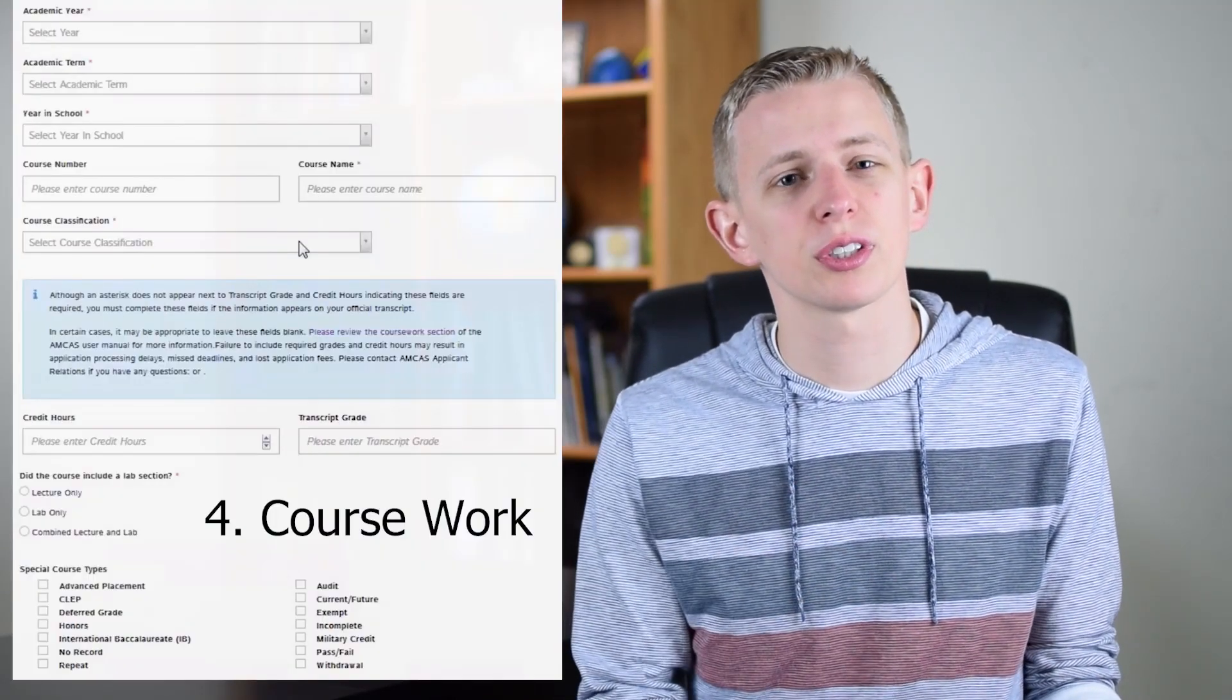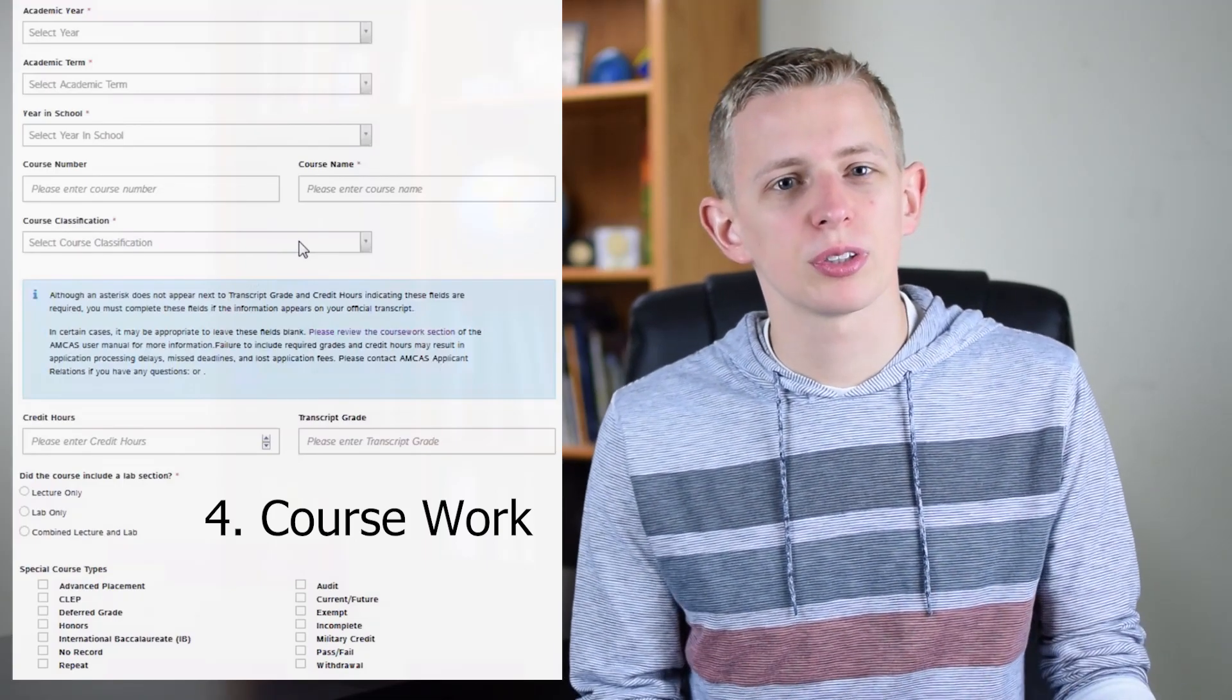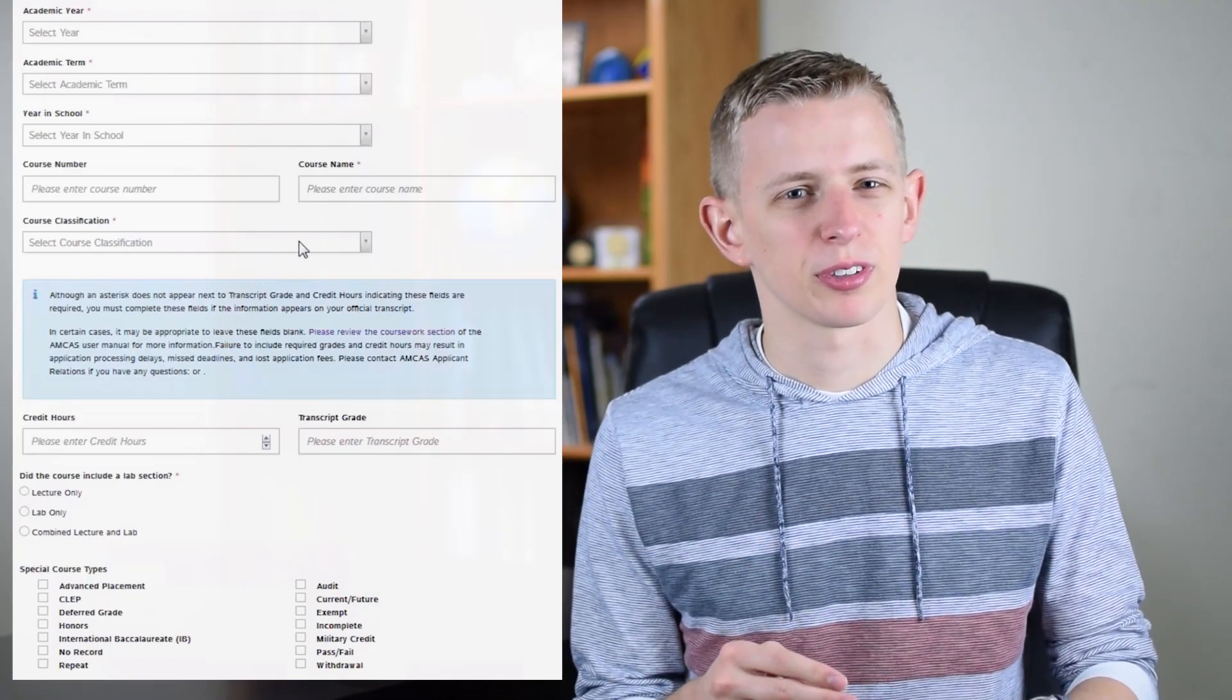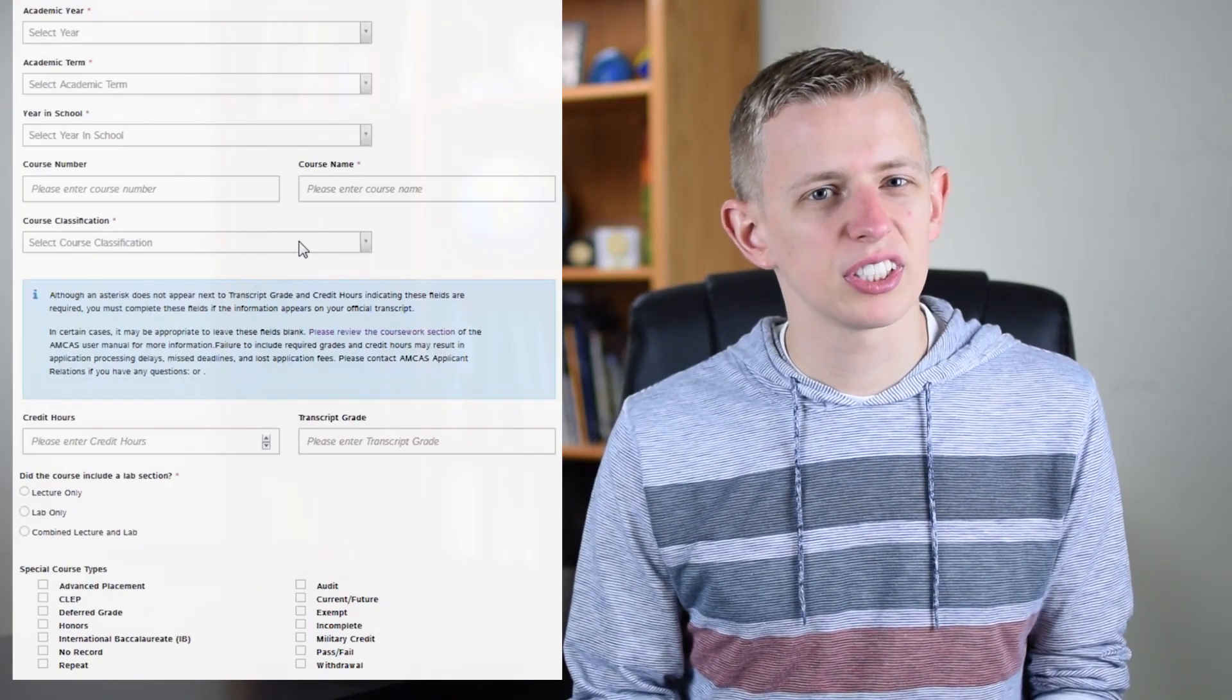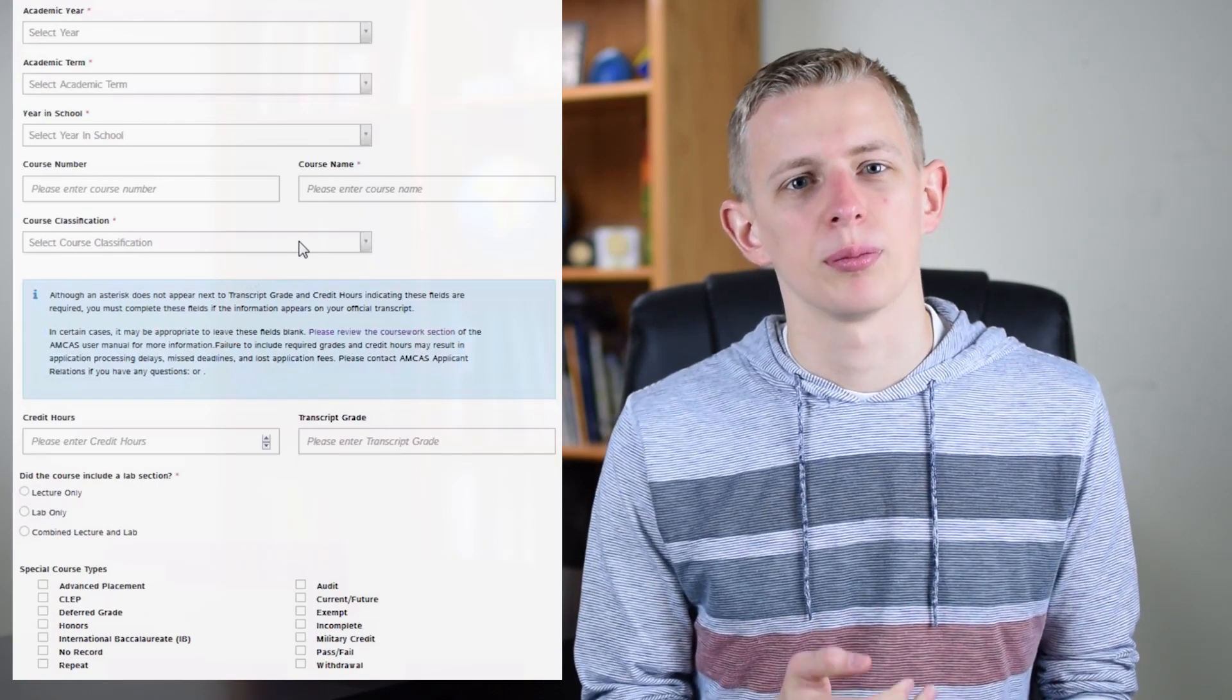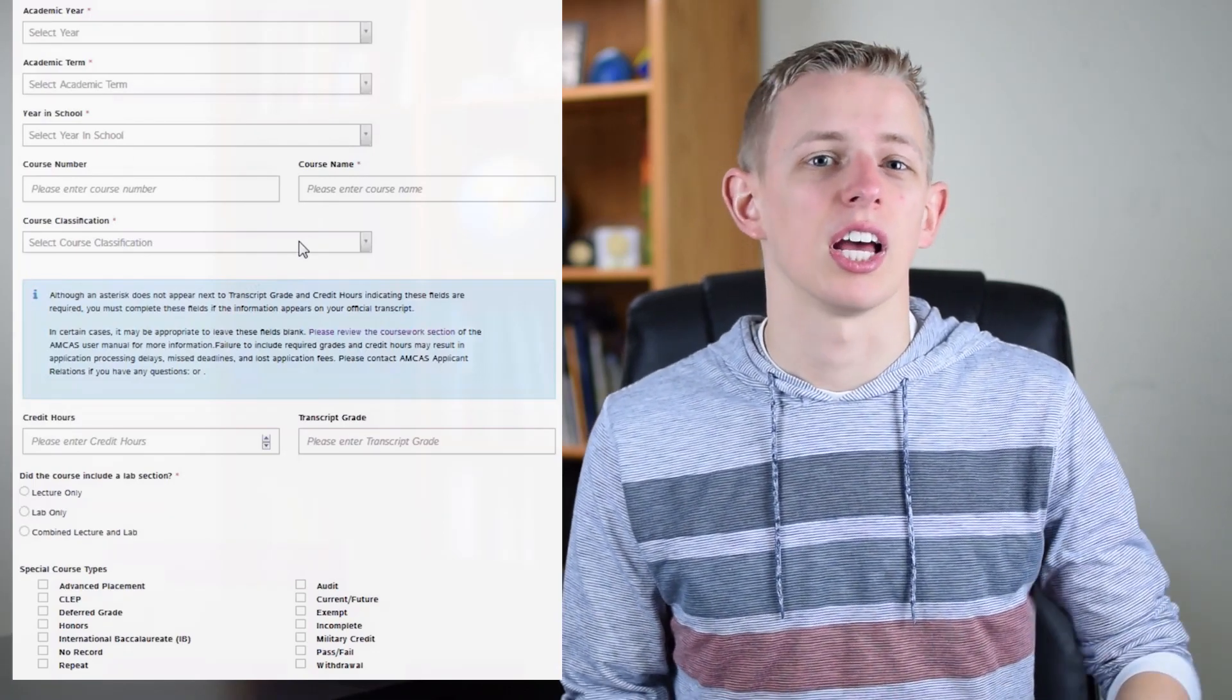The fourth section on AMCAS is coursework, and this is where you enter all of your grades and whether they're lab or lecture, when you took them, where you took them, and what type of course it was. There's quite an extensive list of information they require for each course. It's really important that you fill this section out perfectly so that it exactly matches your transcript, because if it doesn't match, AMCAS is going to flag your application and not verify it.